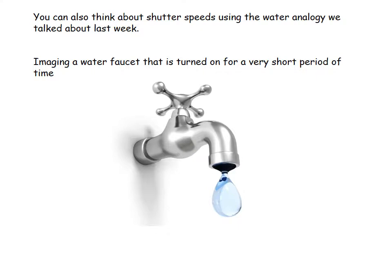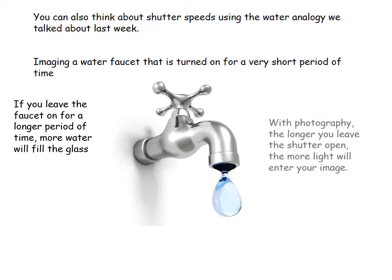You can also think about shutter speeds using the water analogy. Imagine a water faucet turned on for a very short period of time — just a little bit of water ends up in the bottom of the glass. Think of that as your picture: just a very small amount of light ends up in it. If you leave the water on for a longer period of time, more water fills the glass. With photography, the longer you leave the shutter open, the more light will enter your image.